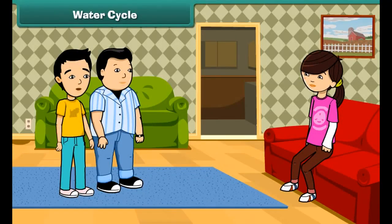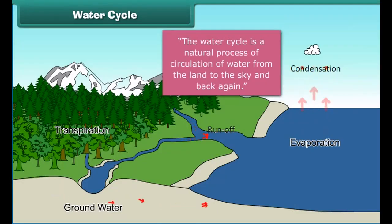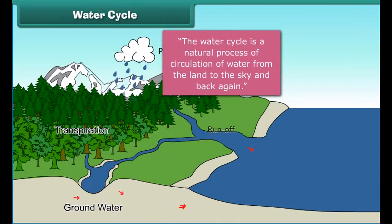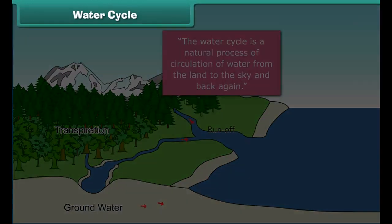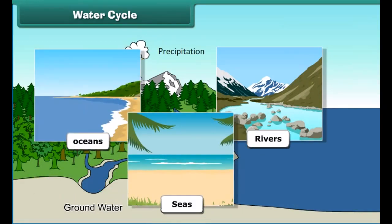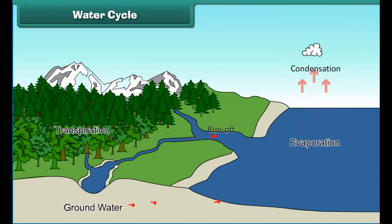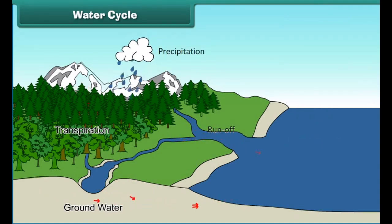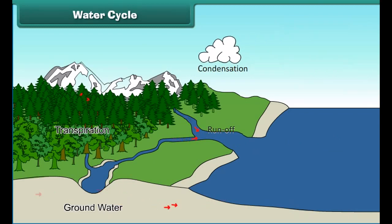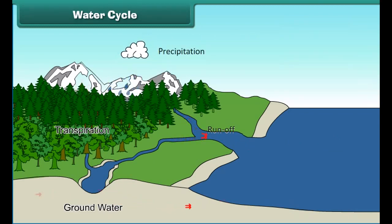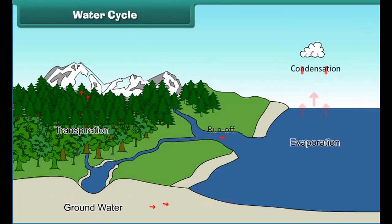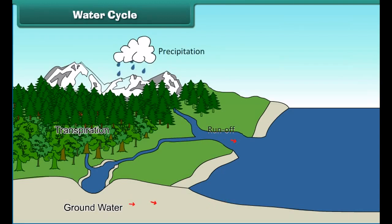Sister, yesterday you also told me about the water cycle. Please tell us more about it. Okay, the water cycle is a natural process of circulation of water from the land to the sky and back to the land. In this process, water in water bodies like rivers, seas and oceans gets heated up by the sun and forms water vapours. This water vapour rises up in the air and gets cool, and turns into cloud and finally into rain. Then, after raining, land water goes to lakes and rivers, which then flow back to the seas or oceans, and the cycle completes. This cycle gets repeated again and again.